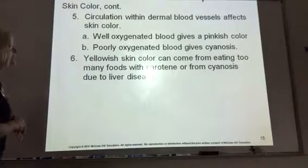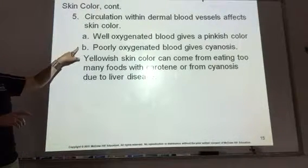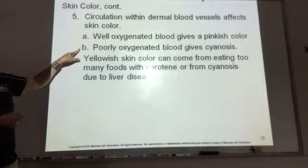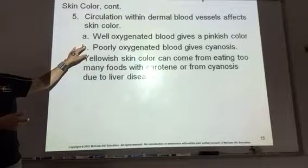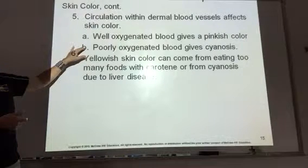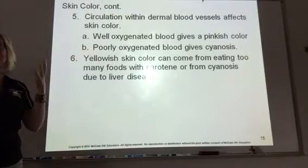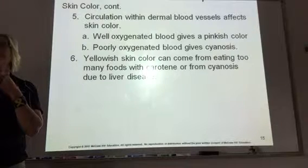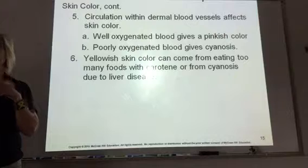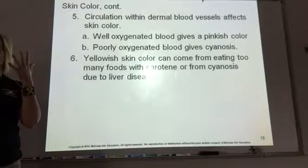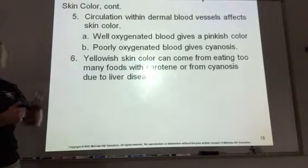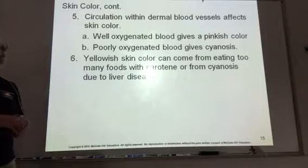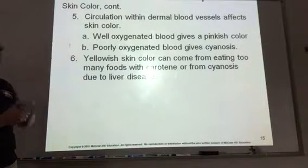Circulation also affects skin color. Poorly oxygenated blood gives you cyanosis — cyan is blue — so poorly oxygenated blood gives a bluish color. When someone is having a heart attack or choking, if their skin starts to turn blue, it's because oxygen is not getting to their skin. Pink is a typical color for well-oxygenated blood.